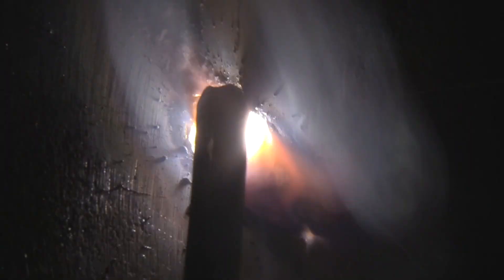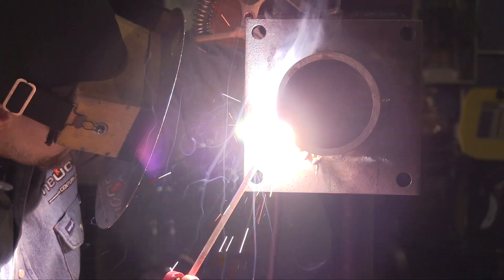Rod angle with a 5/32 rod is fairly forgiving, and sometimes you have to cheat a little bit and use quite a push angle when you're going uphill with a large electrode like this.